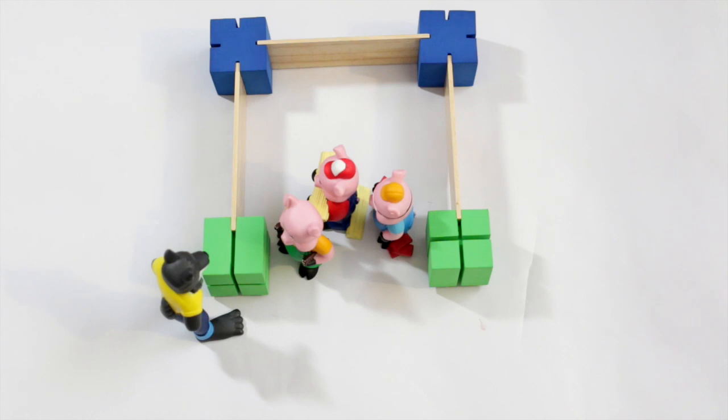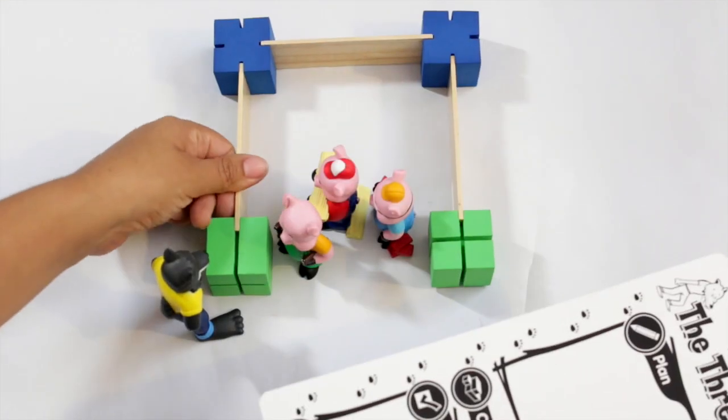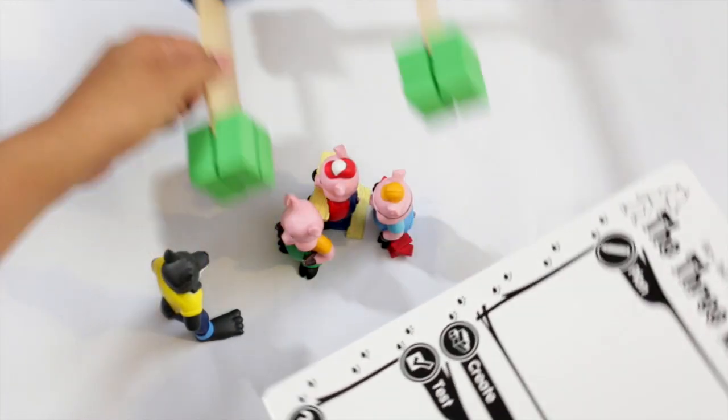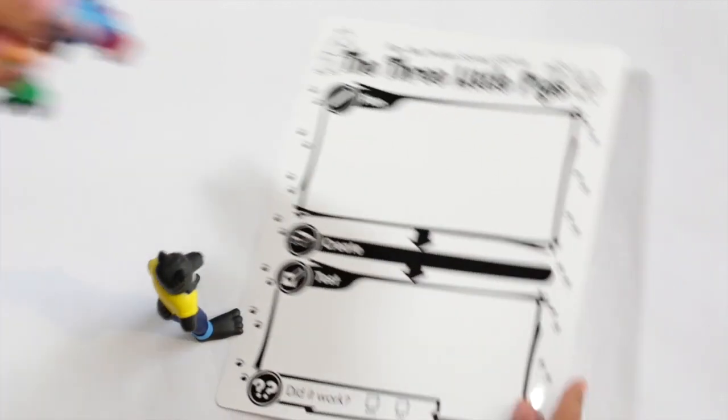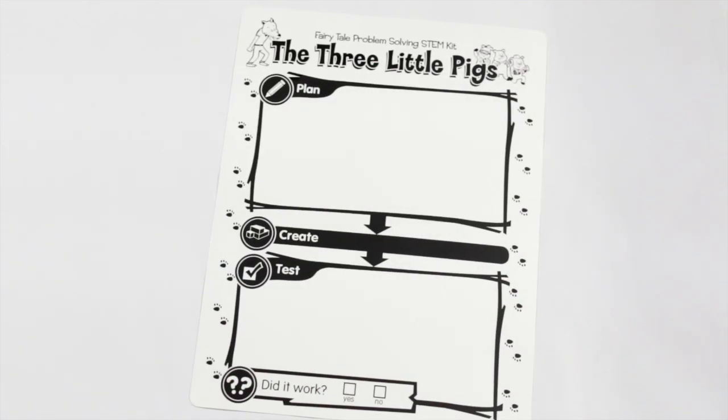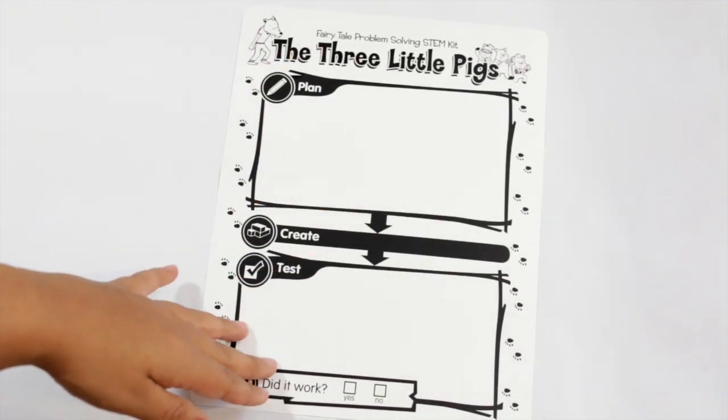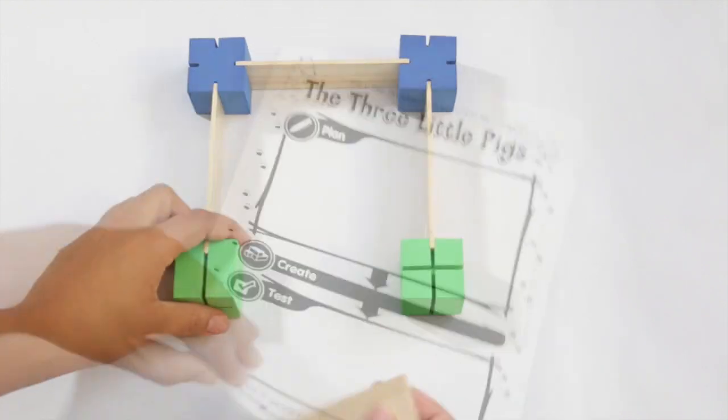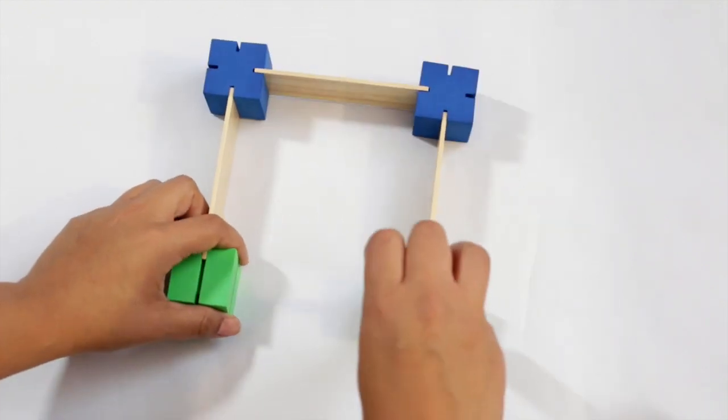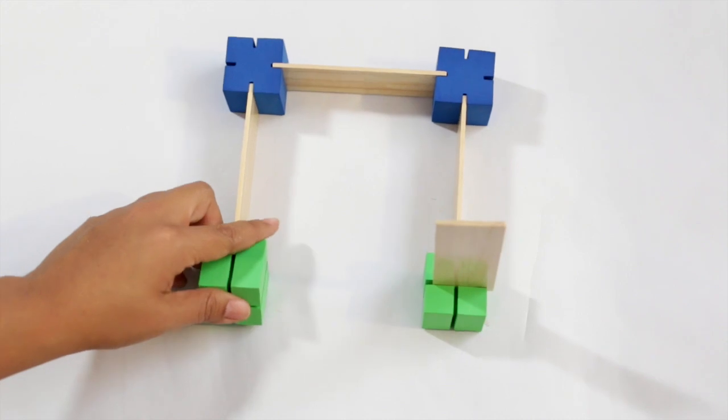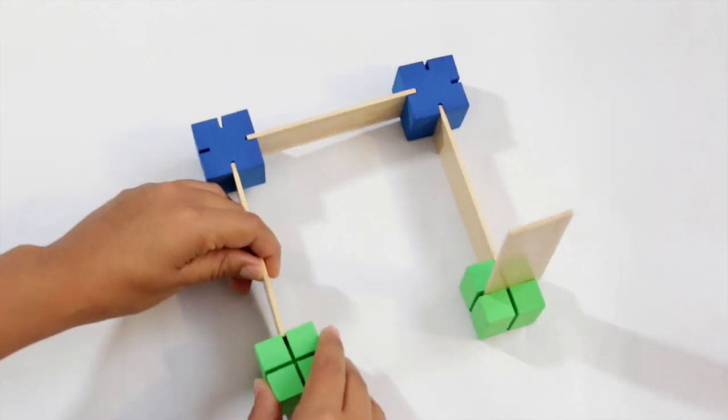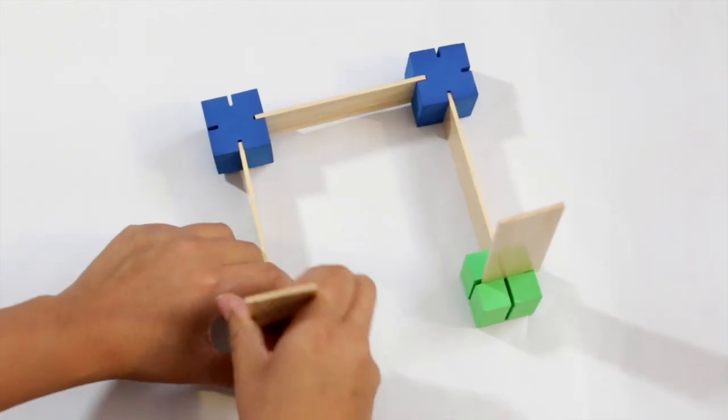Then you can go back and do the process all over again. Why didn't this work? What could we have done better to change it? Let's do the whole process over again and redo our plan. And then you work through the whole process until you find a house that's substantial. So once you do your new plan, you can go ahead and build a bigger, better house until you have something that can withstand the wolf's blowing.